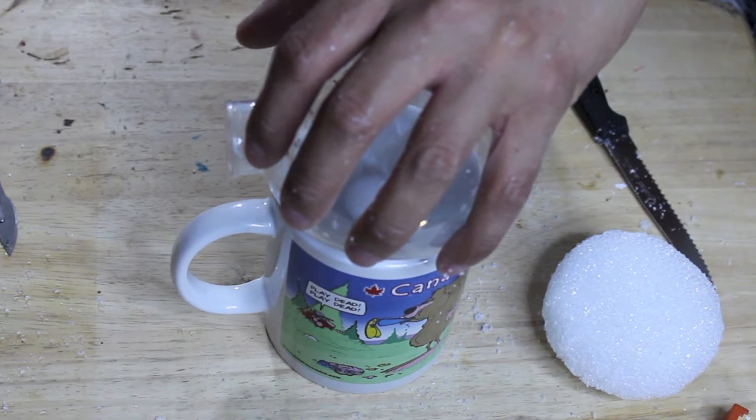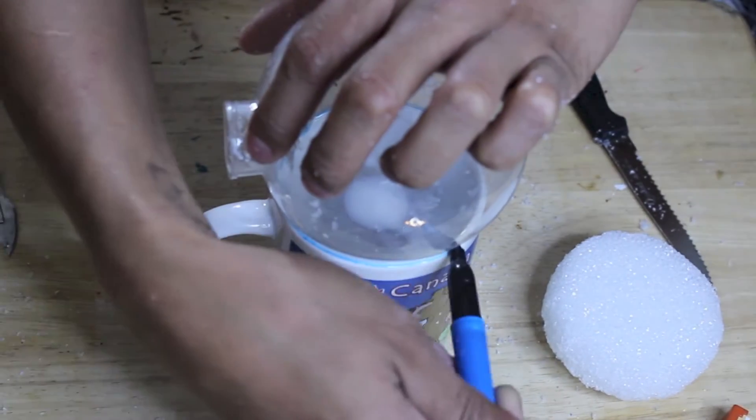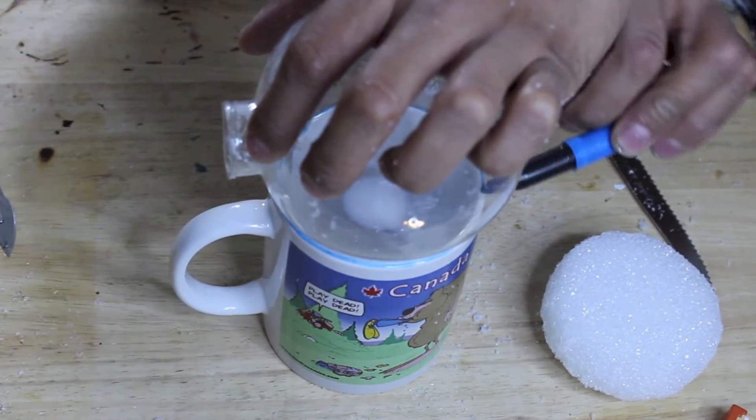First, you want to take the clear ornament and place it onto a mug, then take a marker and trace around it. This will create a perfect circle once you cut it with an exacto knife.